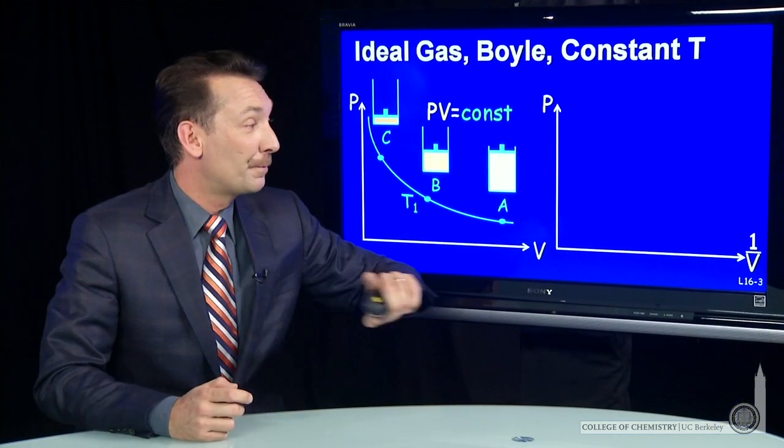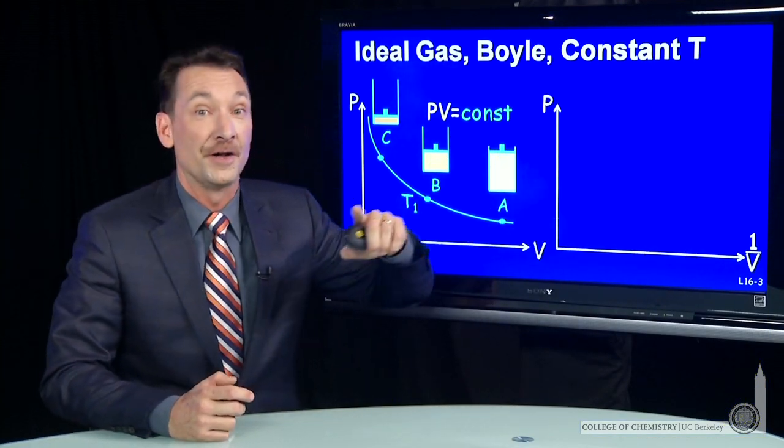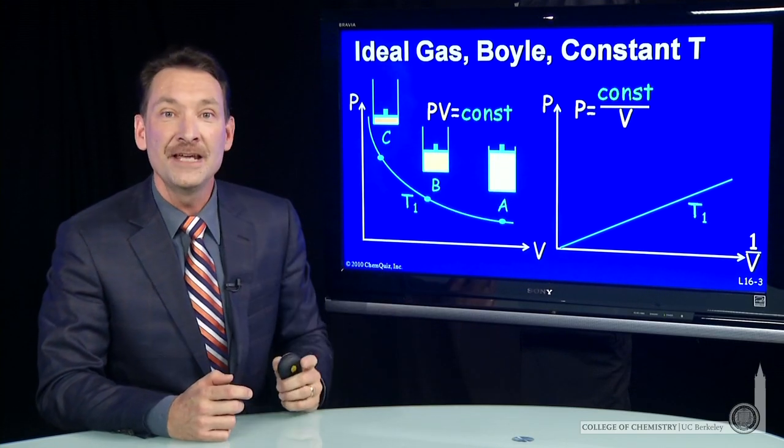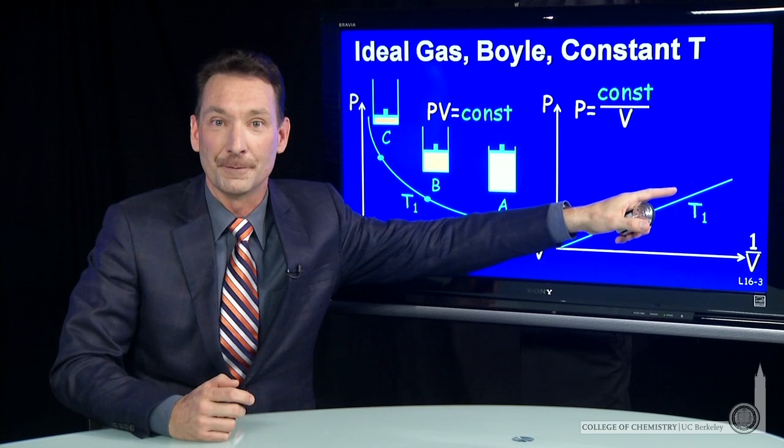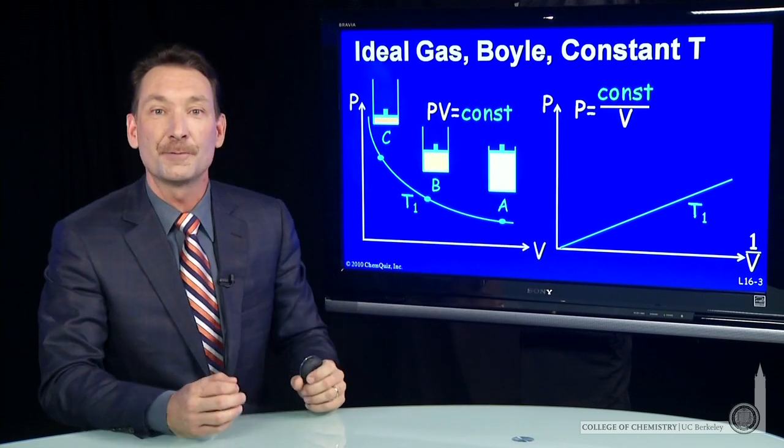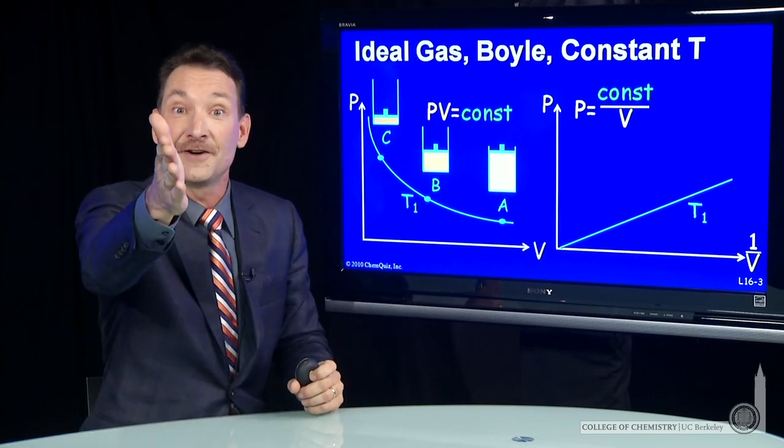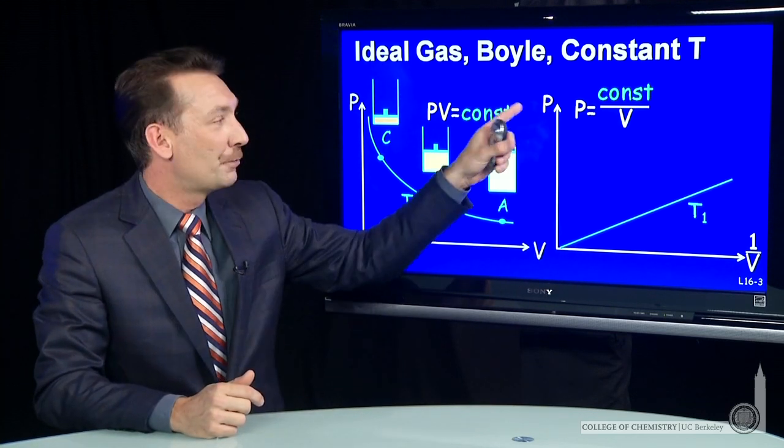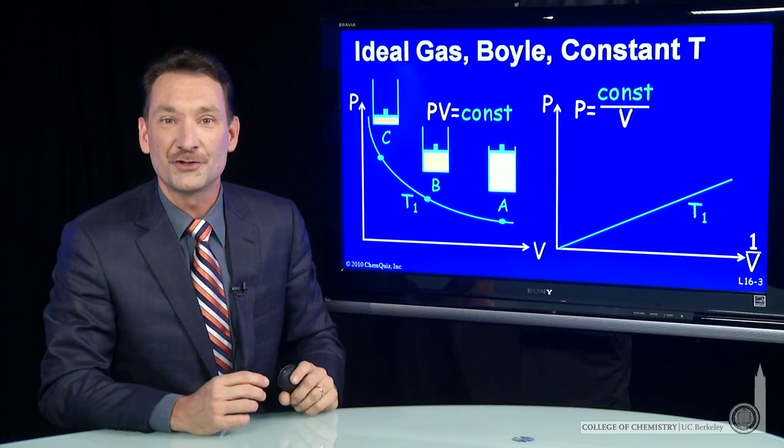Now, that means we could also plot the pressure versus 1 over the volume. And we could do that, P equals a constant over V, to get a linear relationship. It's often good in science to plot something that's linear, because then you can predict very easily trends. So for a fixed temperature, pressure versus 1 over volume is a straight line.